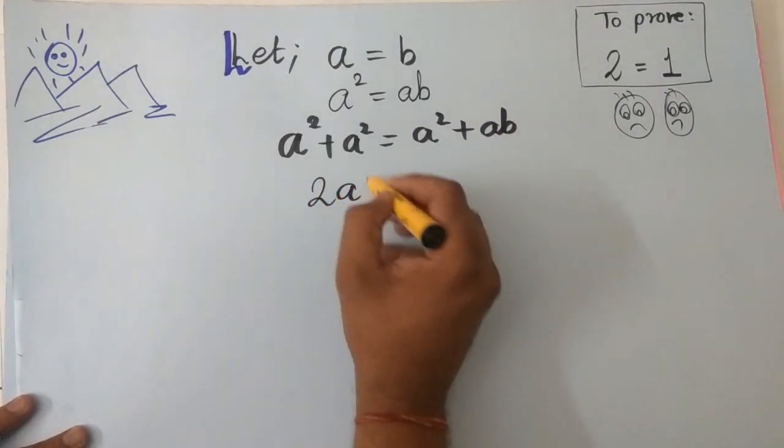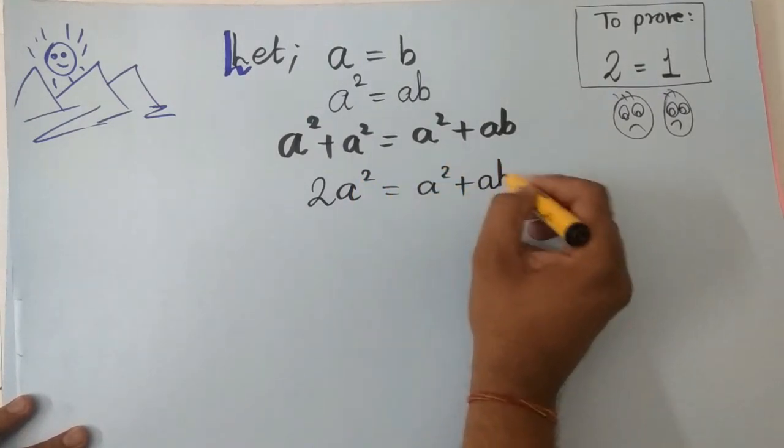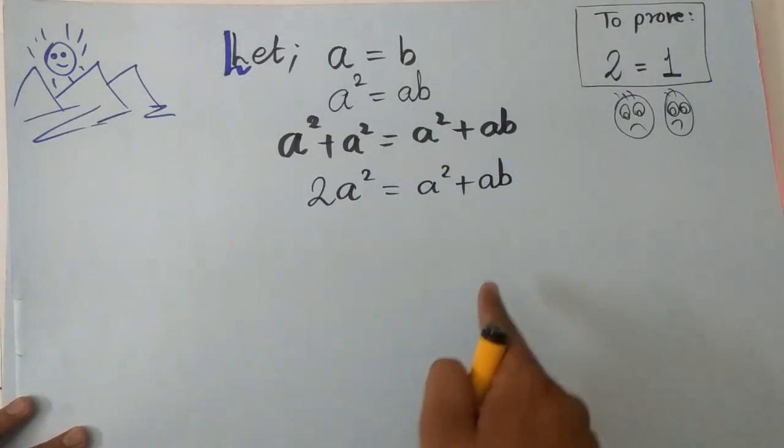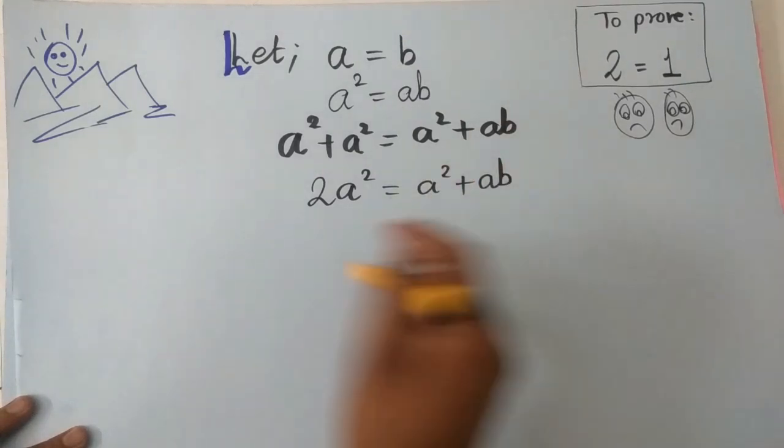Two times of a square is equal to a square plus ab. Now subtract 2ab both sides.